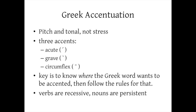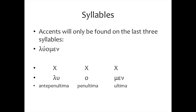First, we need to talk about syllables. Greek is divided, just like English, into syllables that tend to end with a vowel sound. This means it's an open vowel system, and so when you break a word down into syllables, you're going to make natural breaks after vowels and before consonants. There are some exceptions, but by and large this is true. Accents will only be found on the last three syllables of a Greek word.